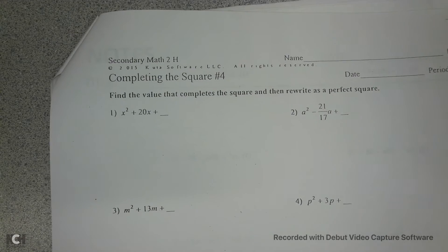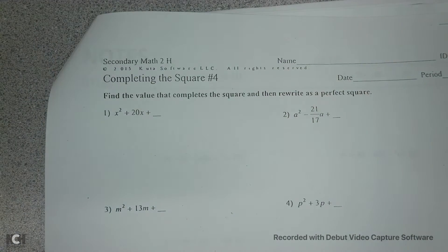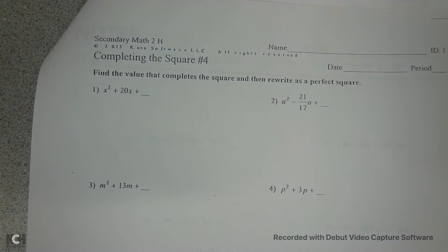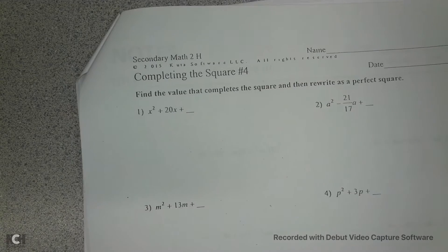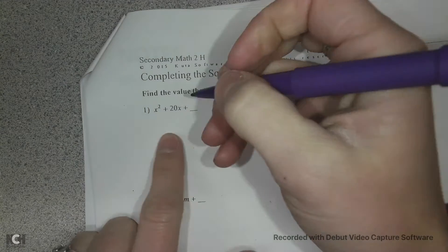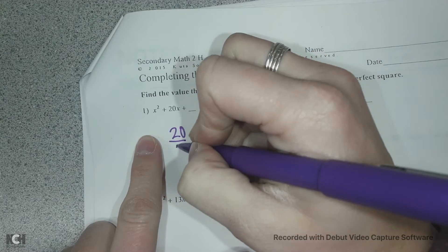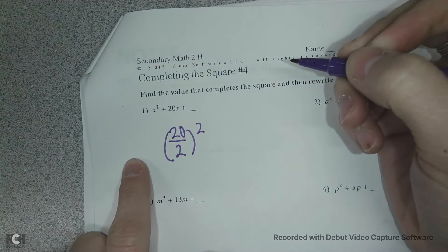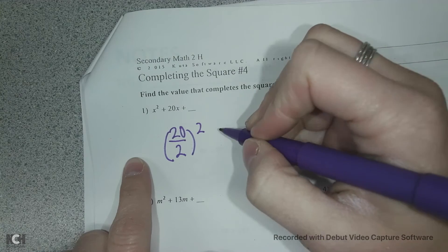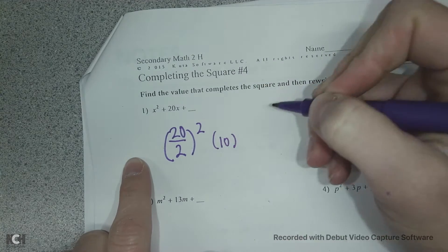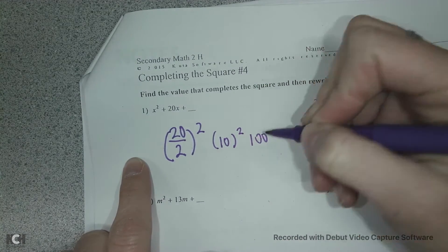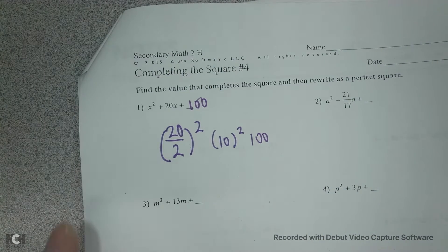So we're going to start by just rewriting our c values and creating new c values for these. So remember the c value is your b divided by 2 squared. Okay, so 20 divided by 2 is 10, and 10 squared is 100 so that would be my c value, that would complete my square.